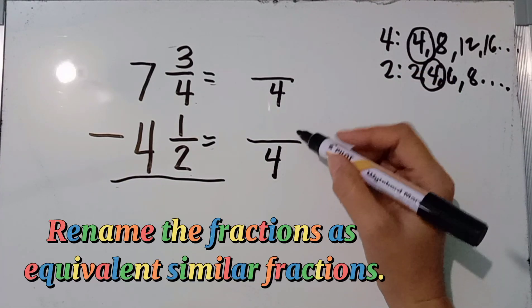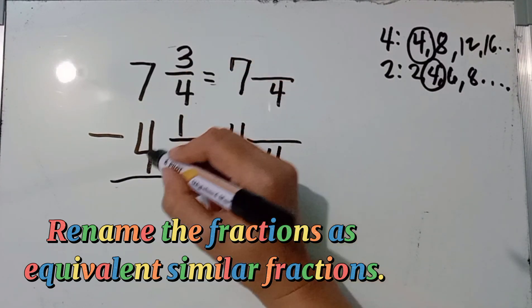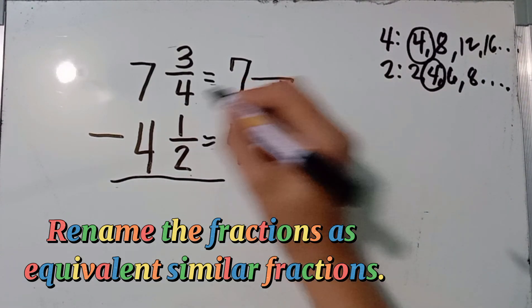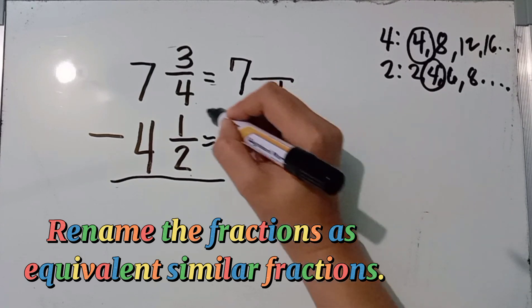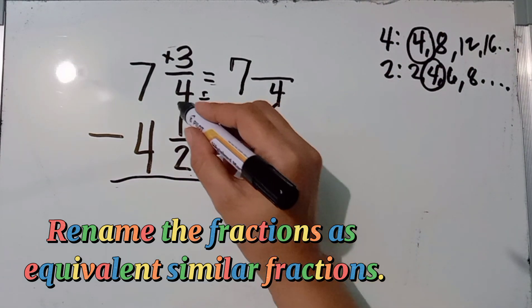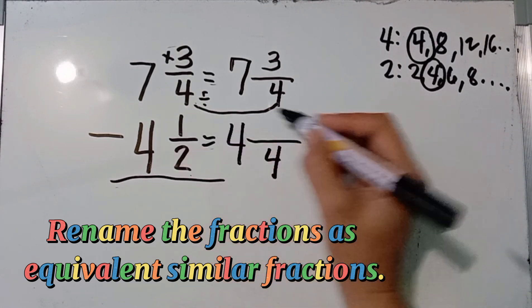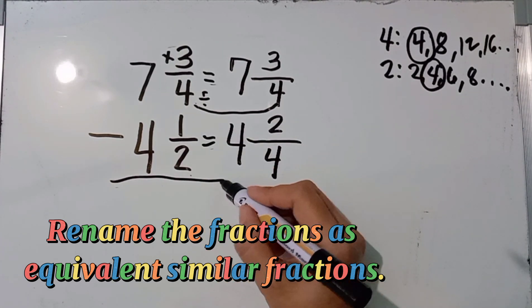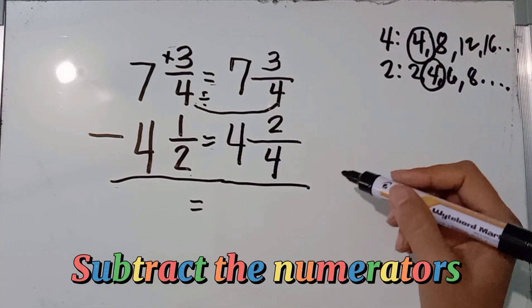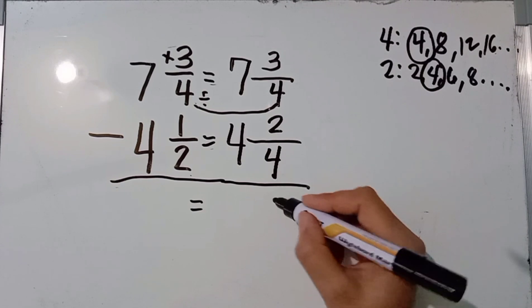Write the LCD of 4 and copy the whole numbers. Divide the LCD by the original denominators: 4 divided by 4 is 1, then 1 times 3 equals 3. 4 divided by 2 is 2, then 2 times 1 equals 2. Now subtract the numerators: 3 minus 2 equals 1.